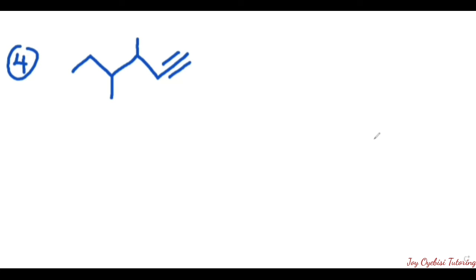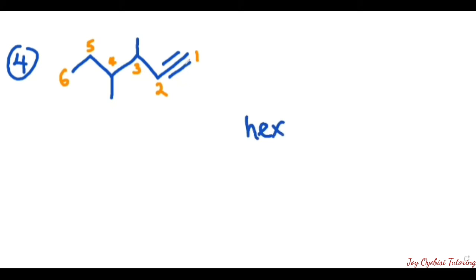We are asked to name this line structure. We start from here to number: one, two, three, four, five, and six. We check other chains — going one way gives four carbons, another way gives five carbons; both are less than six, so they are not the longest chain. So six is our longest chain, represented by 'hex.' The triple bond started from the first carbon, so we have hex-1-yne.